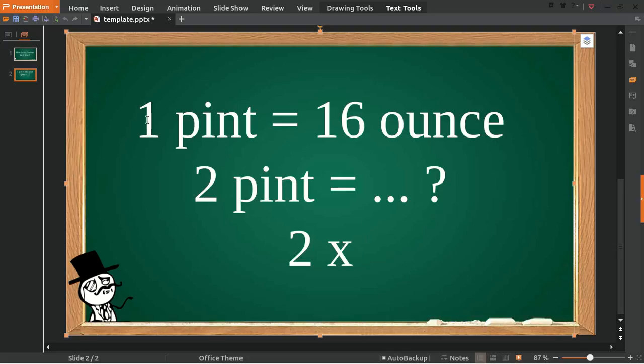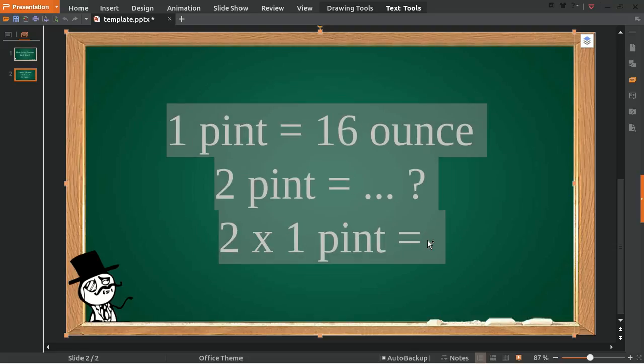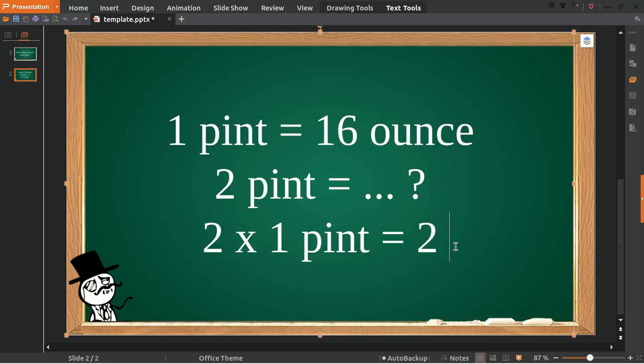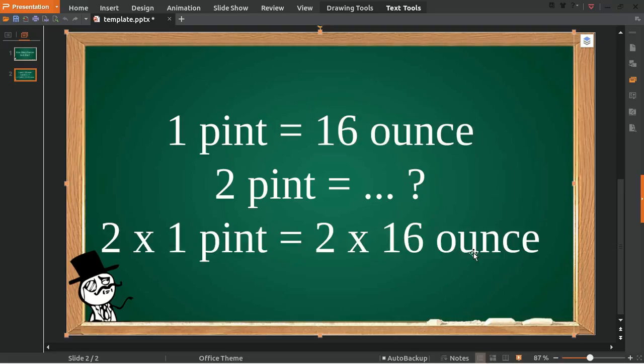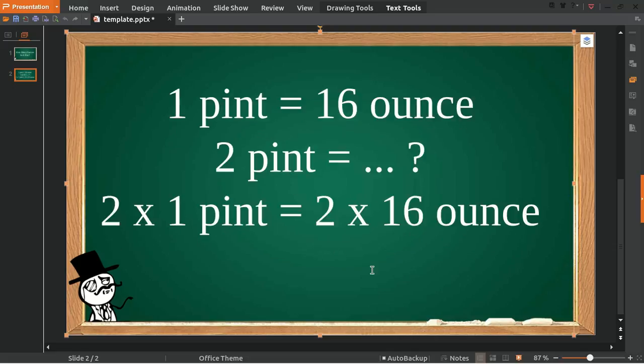And then we multiply 2 with 1 pint. This is an easy way to answer this question. Because we have 2 on the left, we must have 2 on the right as well, and then multiply it with 16 ounces.